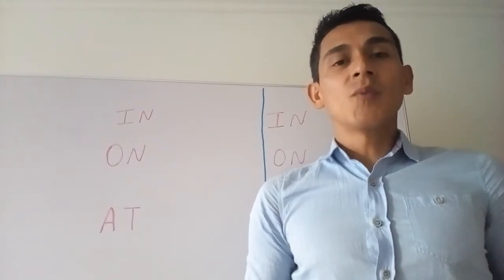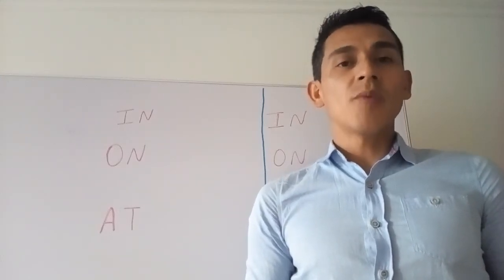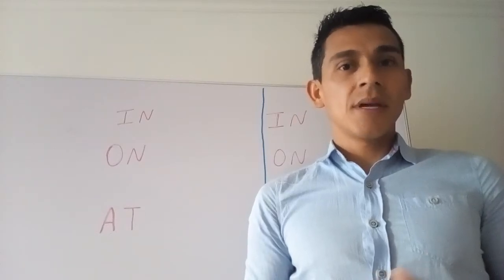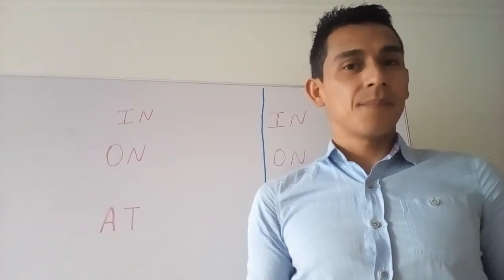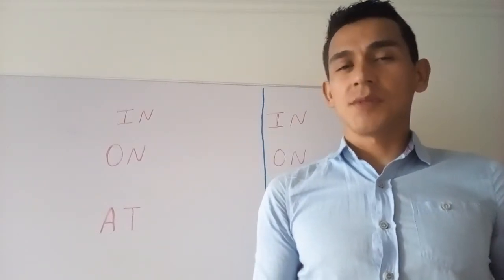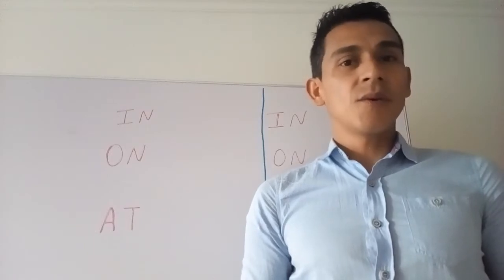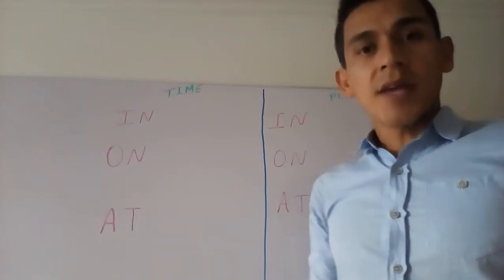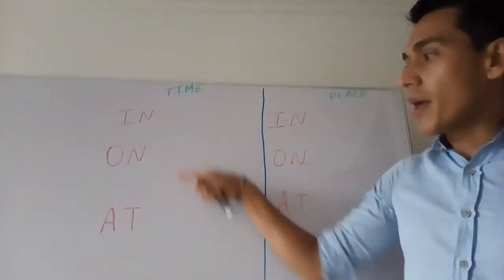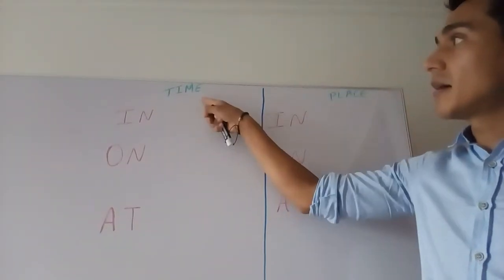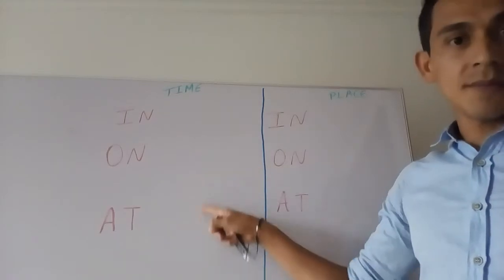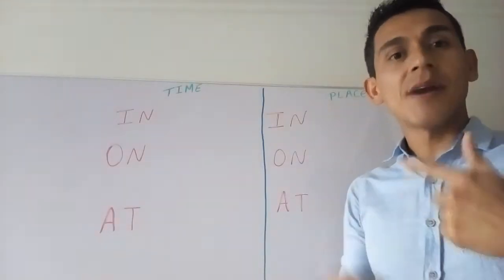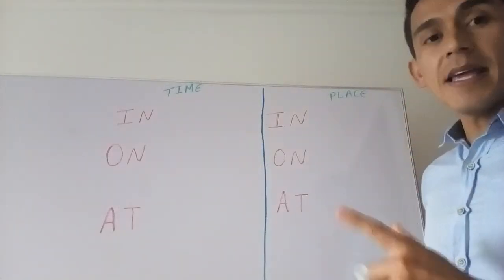Hello everyone. We sometimes have problems when we use in, on, at as prepositions of place and time because we don't know how to use them. In today's video we are going to practice how to use them correctly. We have prepositions in, on, at — let's get started using them with time. I will give you a strategy to memorize and practice.